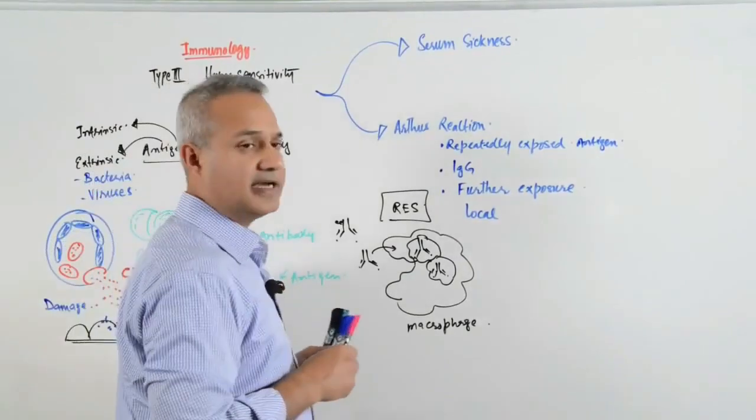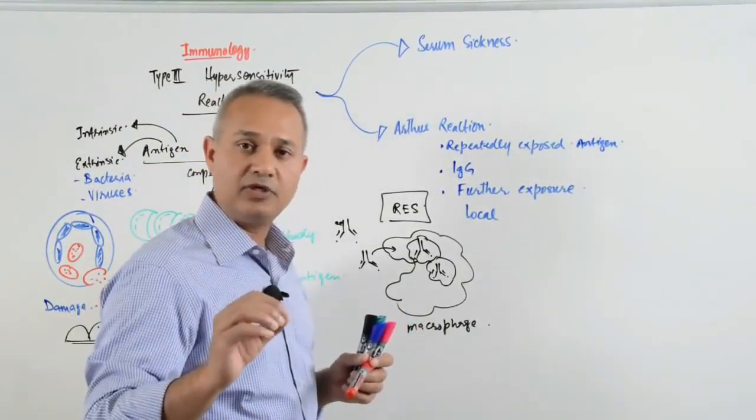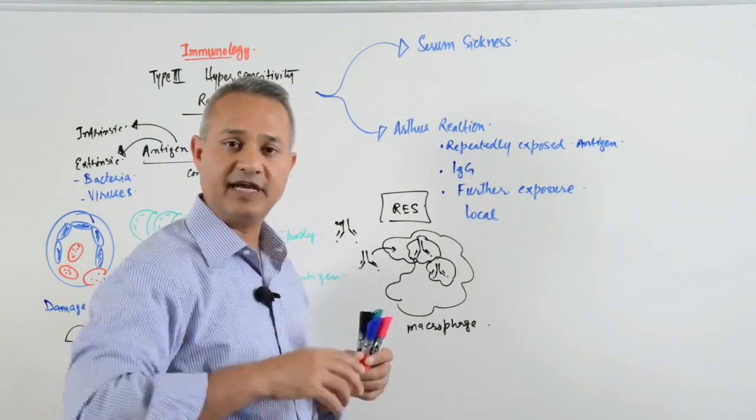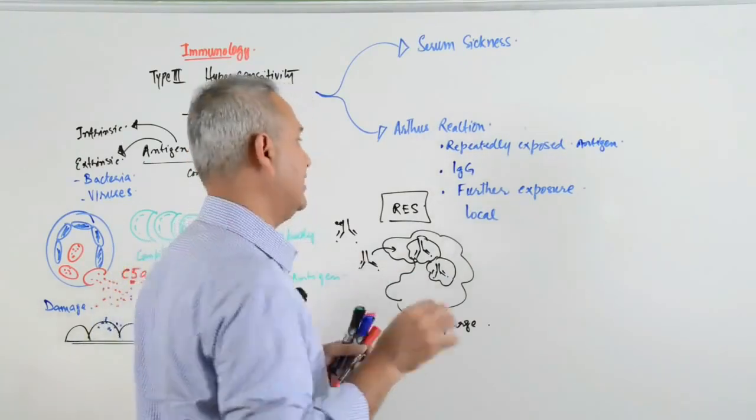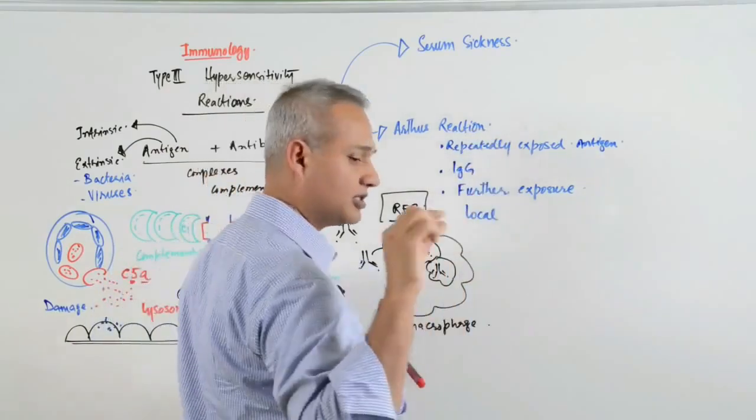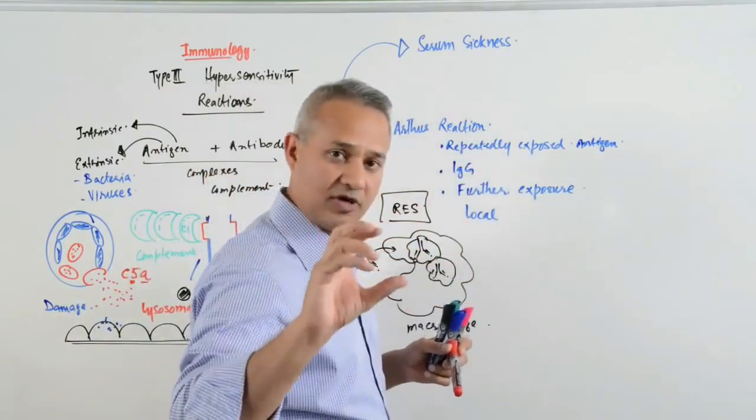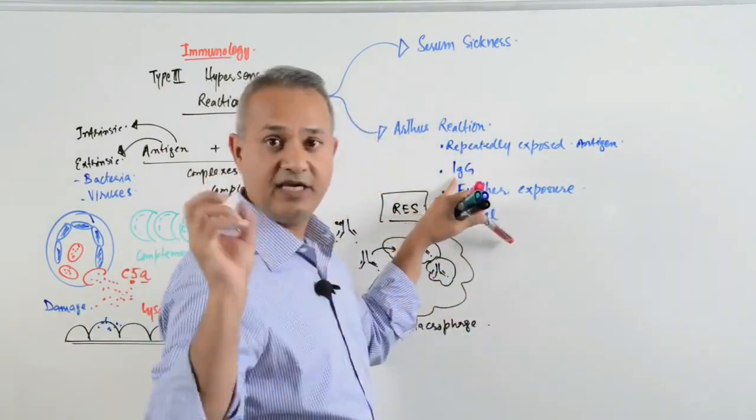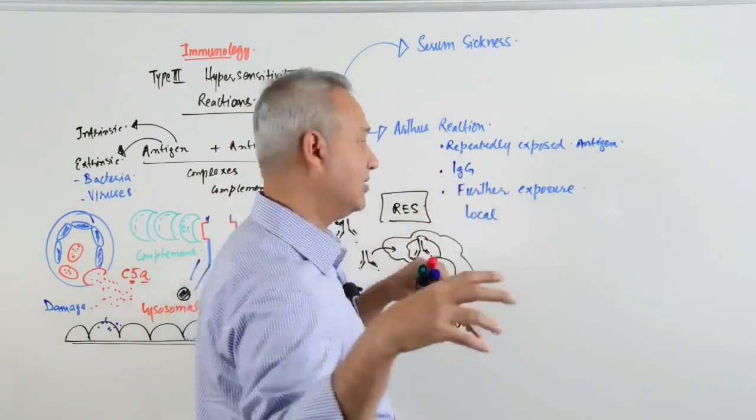Arthus reaction is defined as a local subacute type 3 hypersensitivity reaction occurring in a localized area. This involves immune antigen-antibody complexes deposited in one part. Antibodies, specifically IgG, are already present and attack, making that area sore.